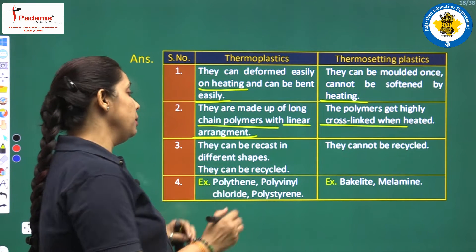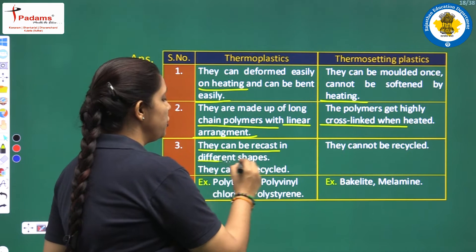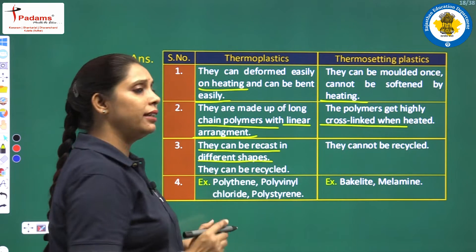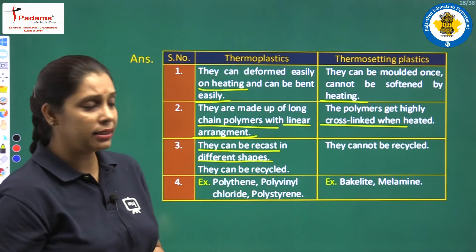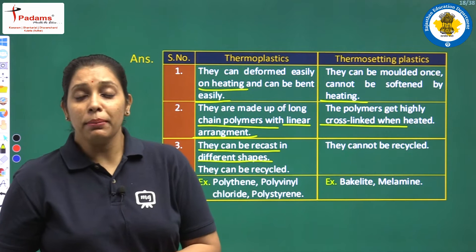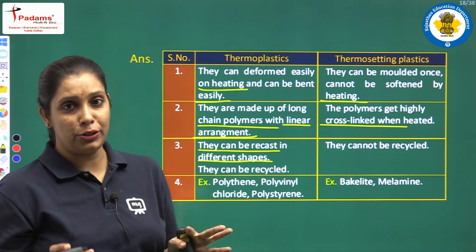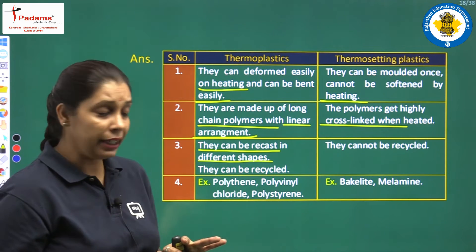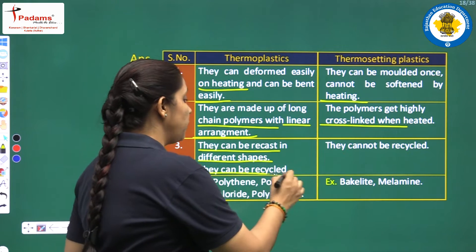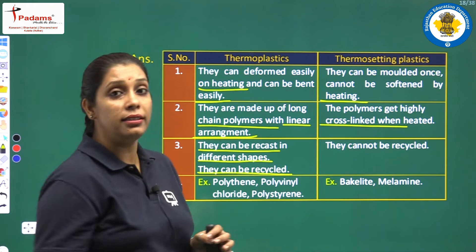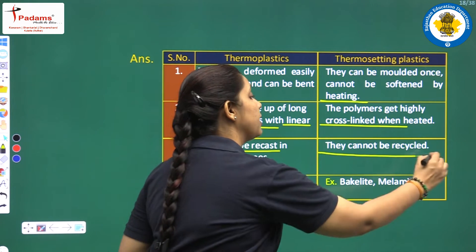Thermoplastics can be recast in different shapes — you can mold and convert them into different shapes. But thermosetting plastic — once it has a shape, it will be permanent. On this basis, thermoplastics can be recycled, and thermosetting plastics cannot be recycled.